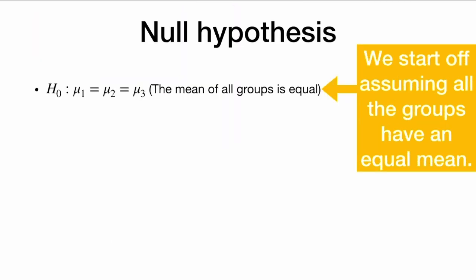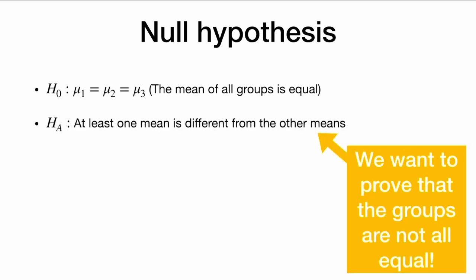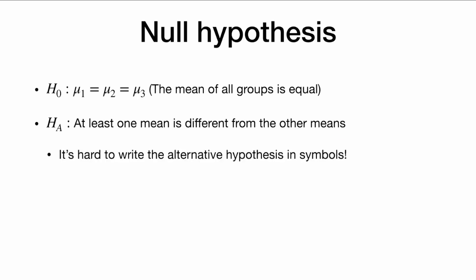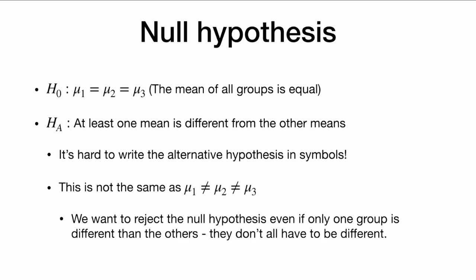In ANOVA, our null hypothesis is that all the group means are equal. We might write that mu1 is equal to mu2 is equal to mu3. We start off assuming that all the groups have an equal mean. The alternative hypothesis is that at least one mean is different from the other means. We want to reject the null hypothesis even if only one group is different than the others — they don't all have to be different.